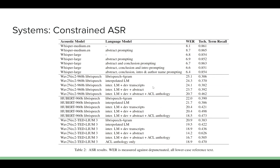With that in mind, we performed unconstrained ASR experiments where increasing quantities of domain-matched data were used during the language model interpolation process. Our results broadly match our expectations regarding the benefits of acoustic and language model domain similarity. Our best performing system for each acoustic model tends to be the one with the largest quantity of in-domain data used during interpolation. Likewise, given the same amount of in-domain data used during language model training, it is the wav2vec 2.0 model fine-tuned on TED-LIUM 3 that performed the best.